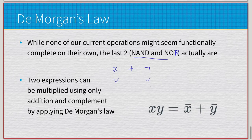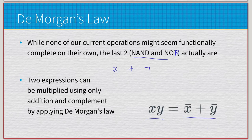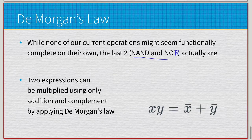With NAND we have multiplication and complement but not addition. With NOR we have addition and negation but not multiplication. The key is De Morgan's law: two expressions can be multiplied using only addition and complement. Specifically, x times y equals the negation of (negated-x plus negated-y). So we can use that Boolean trickery in the form of De Morgan's law along with NAND and NOR to show they are each functionally complete.